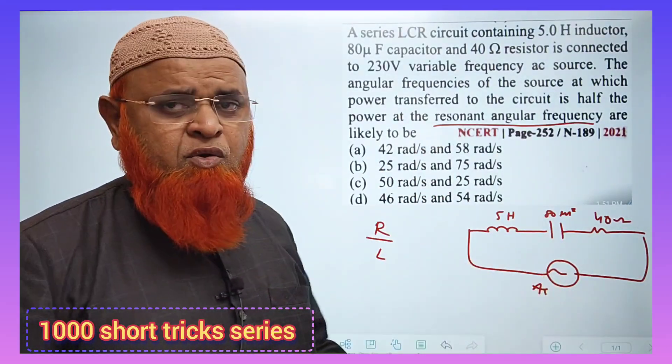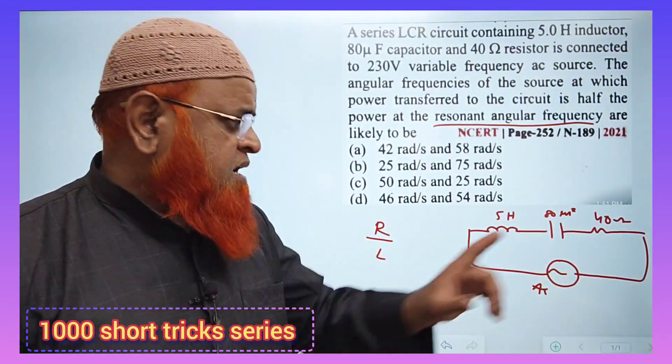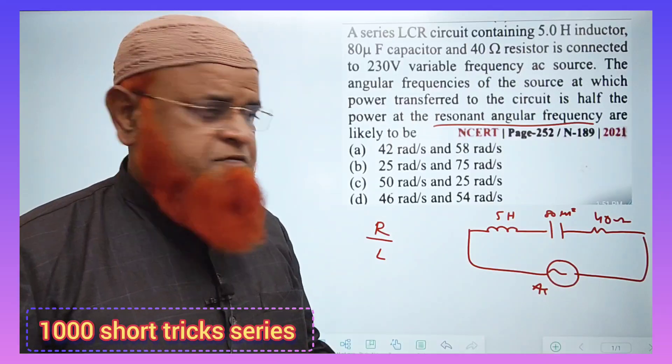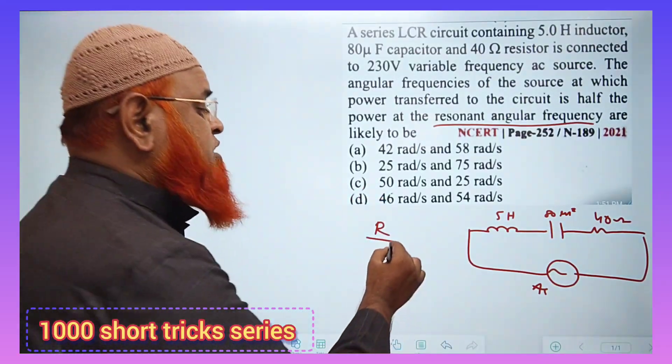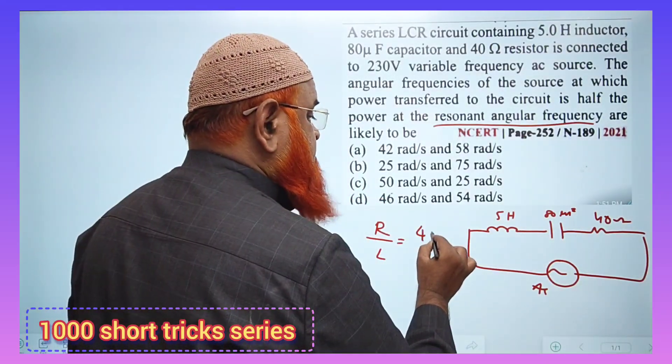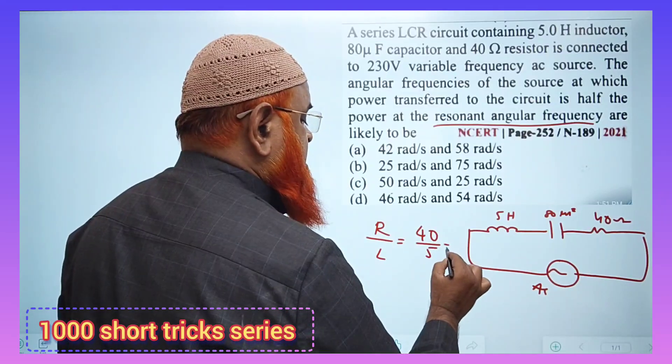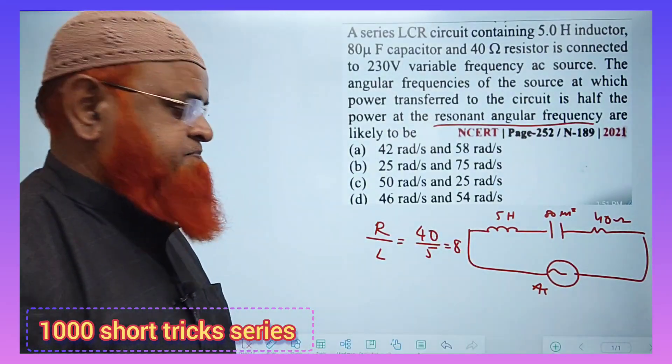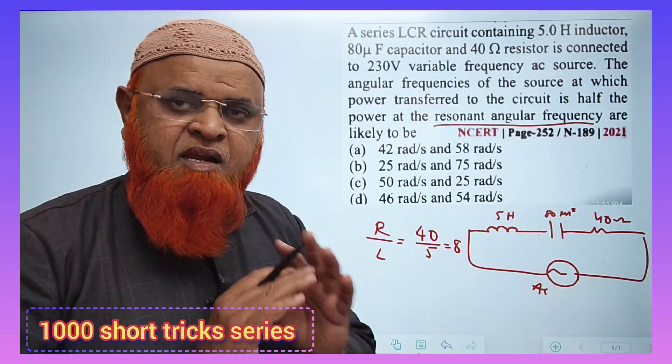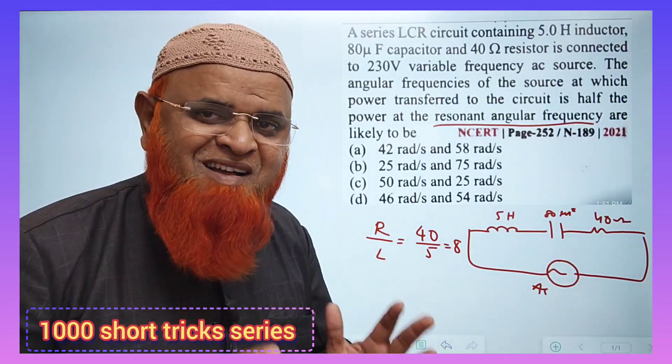You can just do one thing: take resistance and divide with inductance. Then what are we going to get now? Let us see. It is going to be 40 divided by 5 and how much you're getting? 8. Okay.